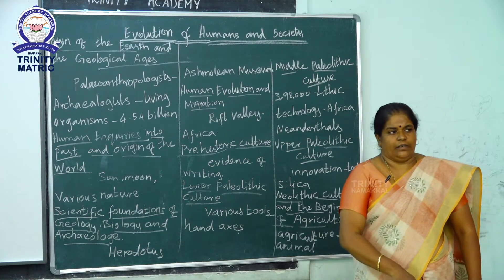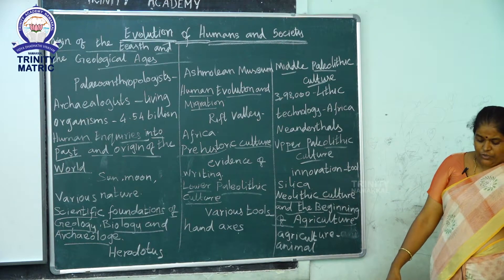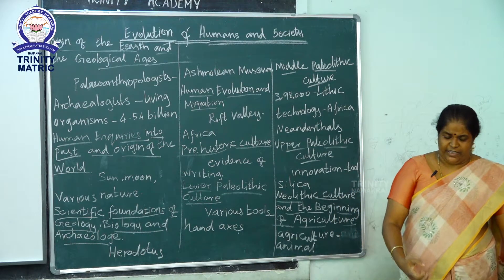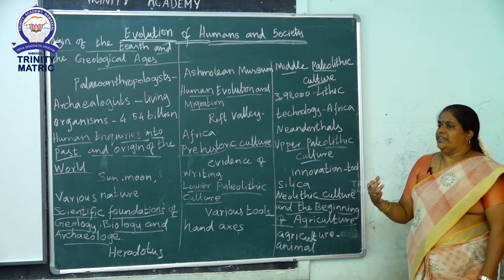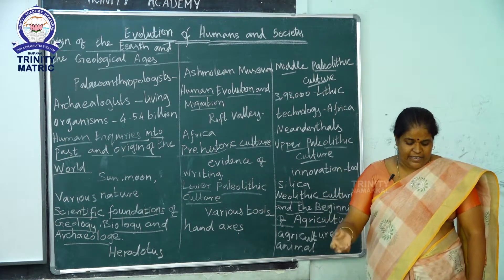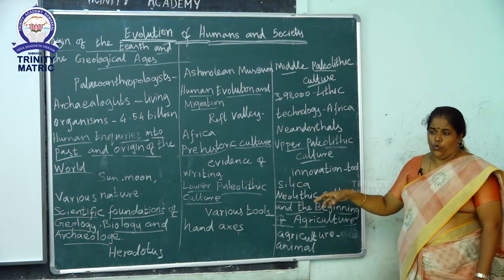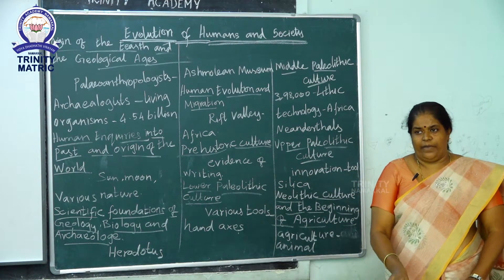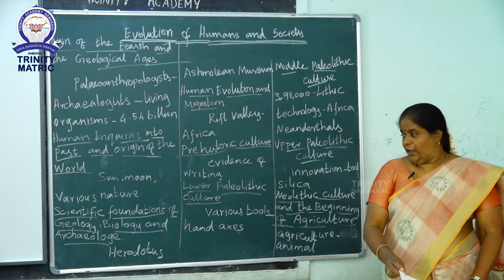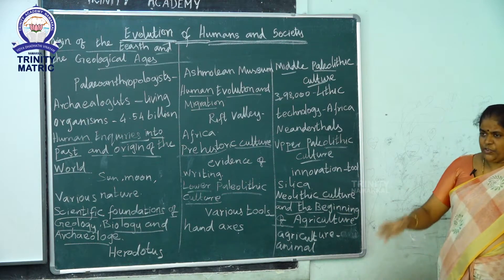In the Upper Paleolithic culture, people invented more tools and technologies using stone. They also used silica, a costly raw material, in addition to stone.